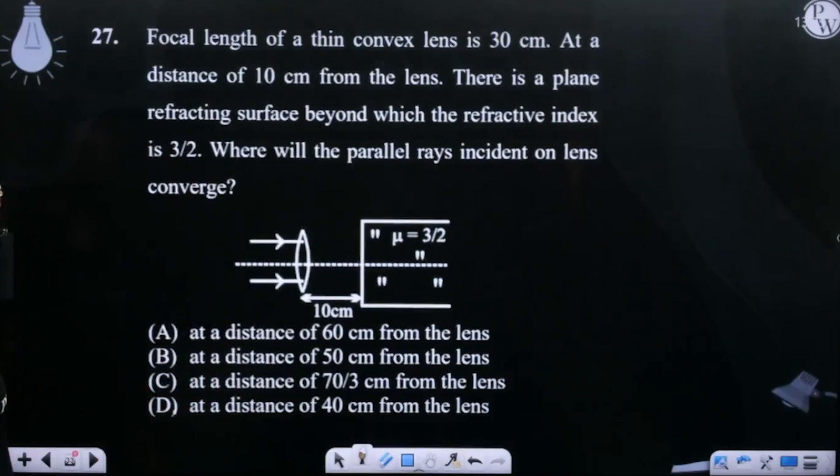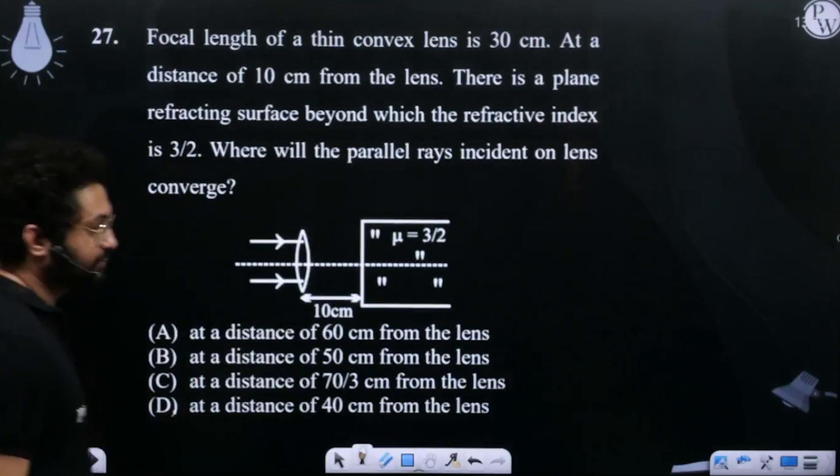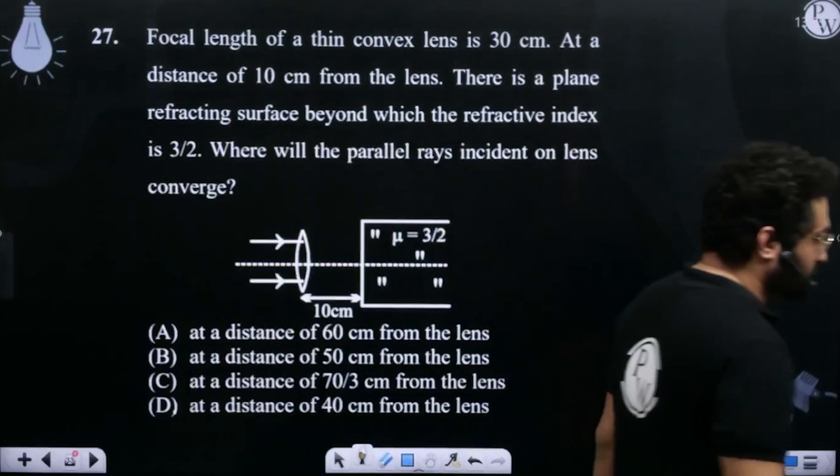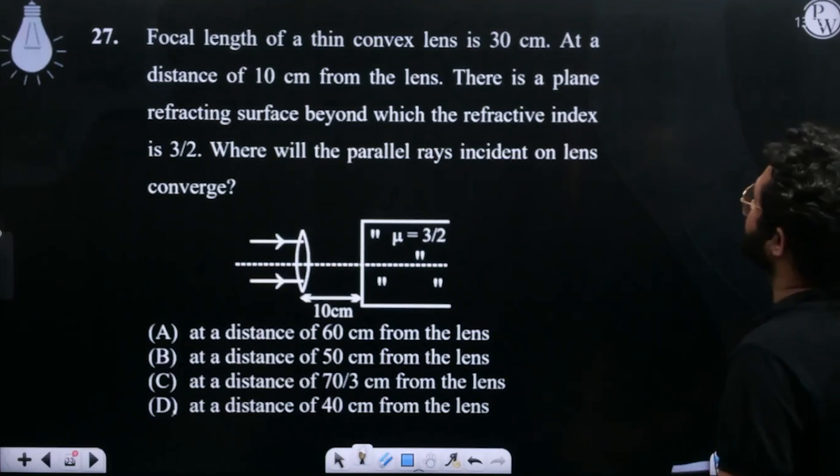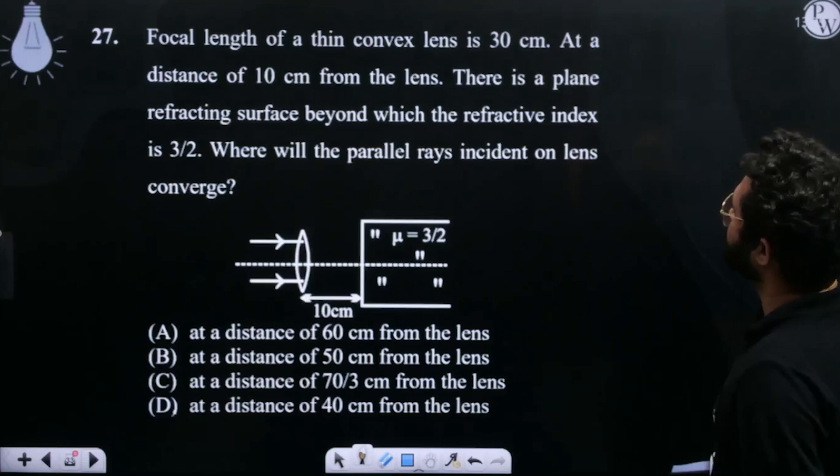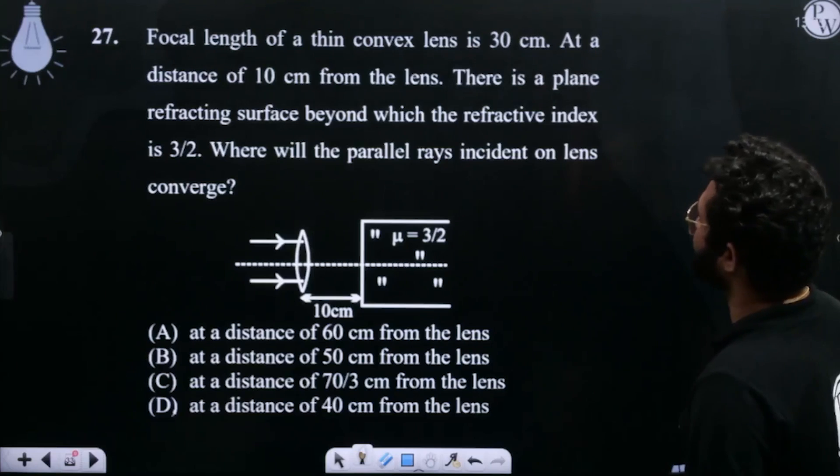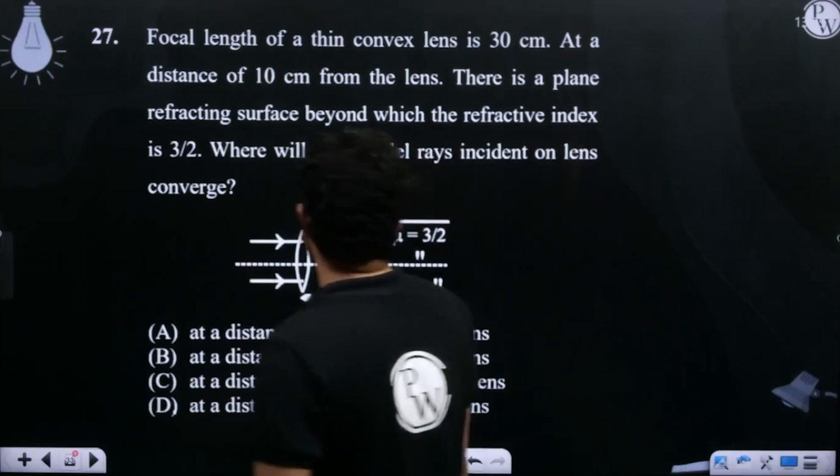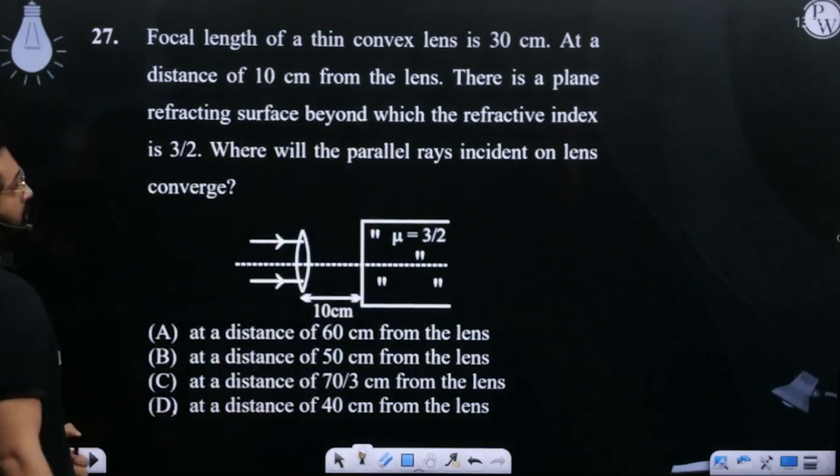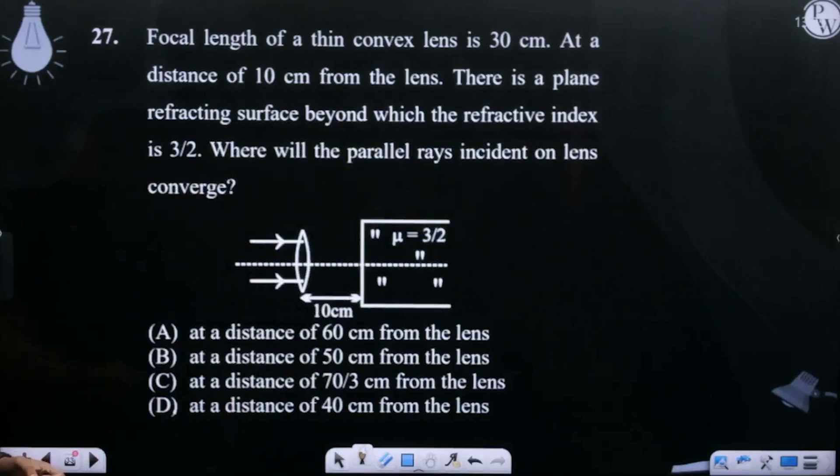The focal length of a thin convex lens is 30 cm. At a distance of 10 cm from the lens, there is a plane refracting surface beyond which the refractive index is 3 by 2. Where will the parallel rays incident on the lens converge?